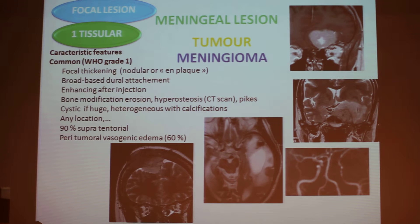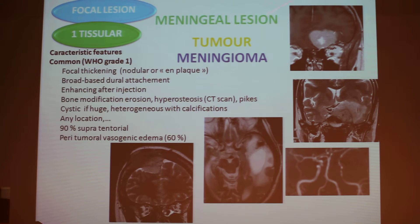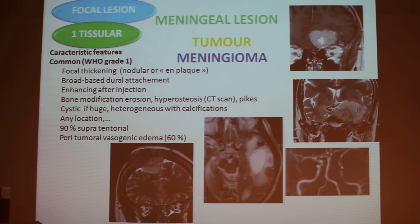When the meningioma is large it is often cystic; it can have calcifications which are very well seen on CT or MRI. This is a cystic meningioma with a very large cyst, calcification, and edema. It can have any location even if most of the time it is supratentorial. Edema is present in more than half of meningiomas. Often in meningioma you can see little channels. In a cavernous sinus meningioma there are two different layers — the external layer is often clearer than the internal layer.